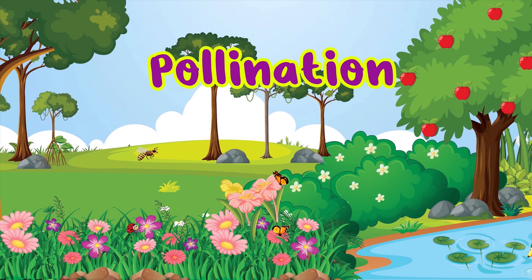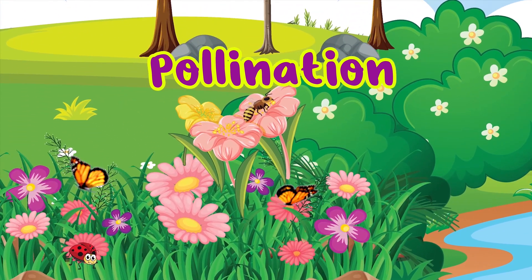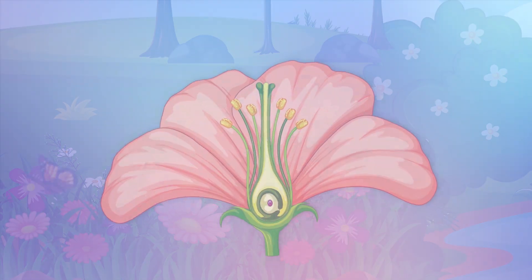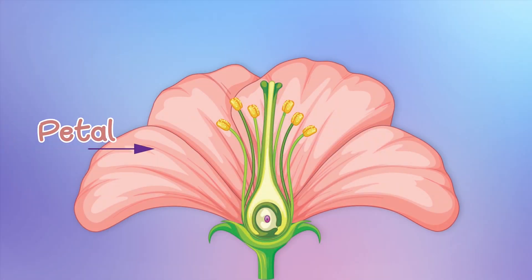Now we will learn about the flower. This is a petal. With its color, it attracts bees and butterflies.